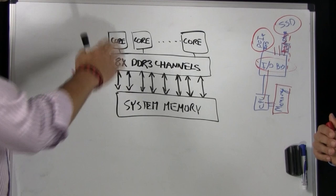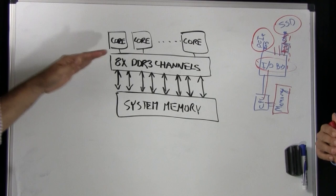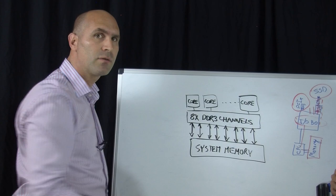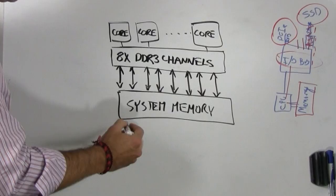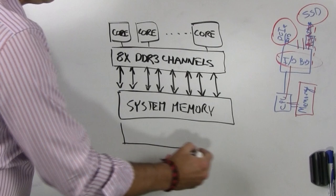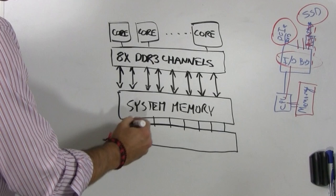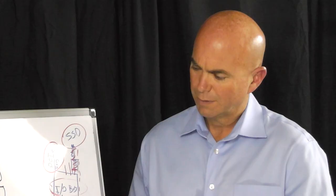So here you've got a typical x86 type configuration where you have multiple cores, CPU cores. They are essentially accessing 8 concurrent parallel coherent memory channels. So any of these cores can basically access any of these memory channels from a bandwidth or content perspective. And then they've got, of course, the system memory which is an array of memory modules that make up the system memory.